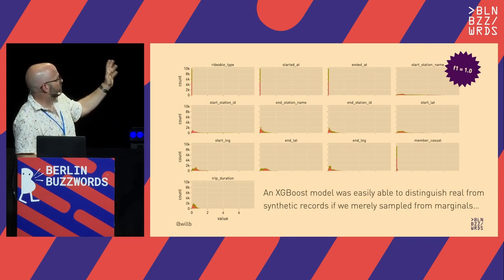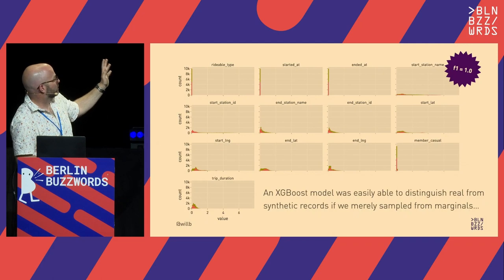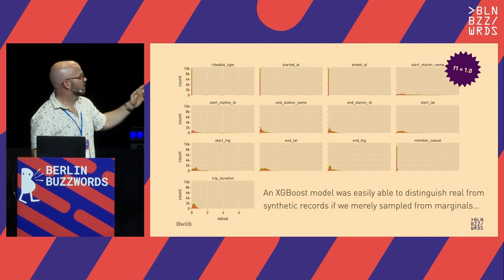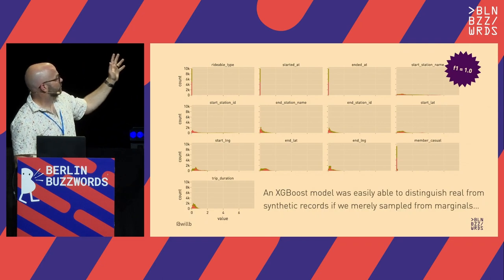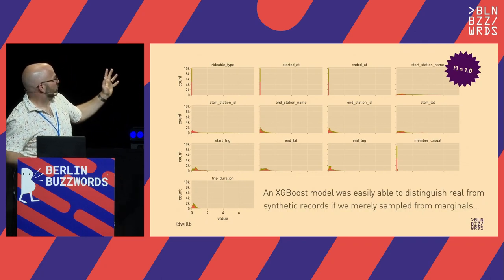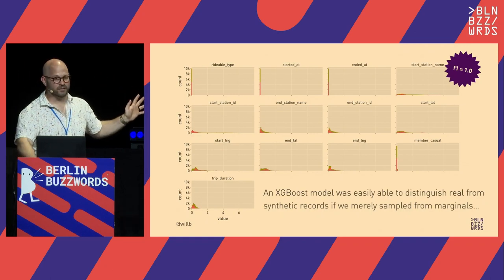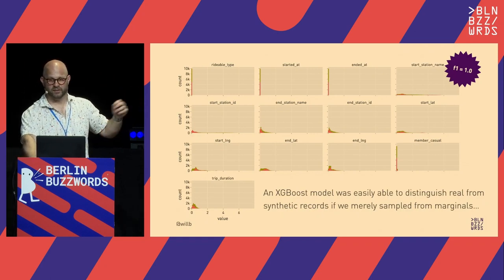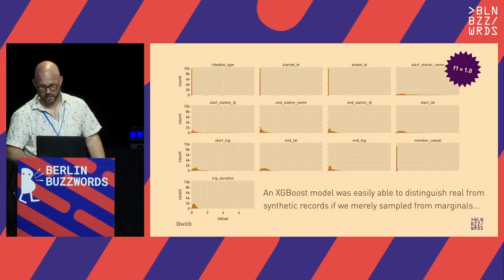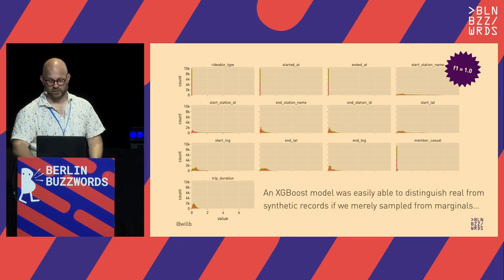What we see is that the features that were important in distinguishing between real and synthetic data are all the features we called out as having correlations. The XGBoost model is learning that if we have a real thing, this station ID is going to correspond to this station name. If we have a synthetic thing, it's not. So how can we handle this when we generate data?